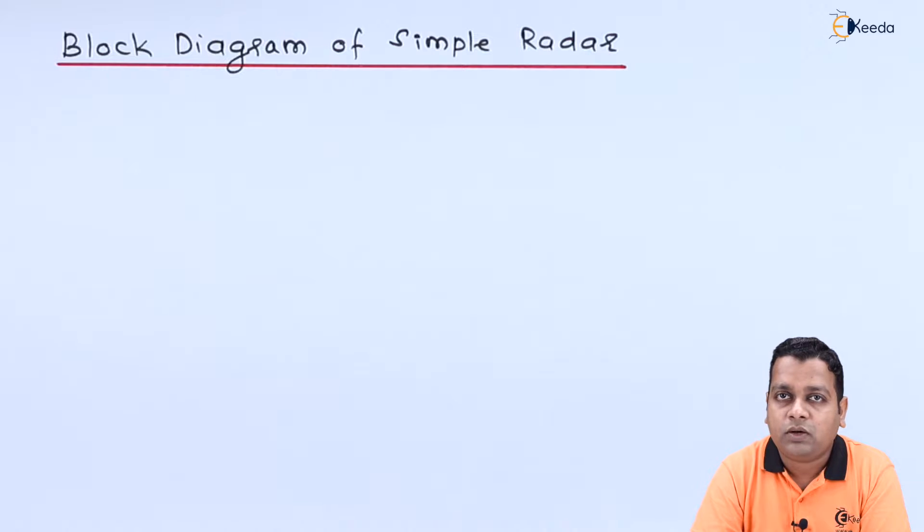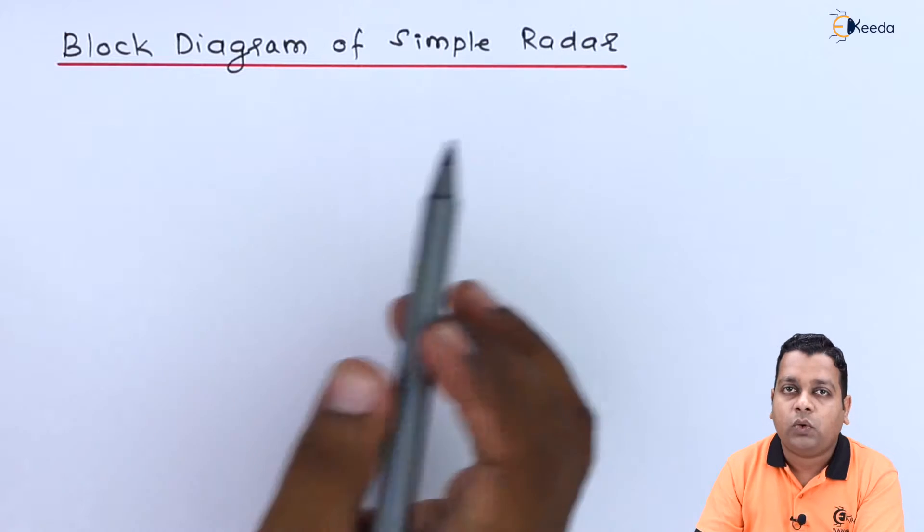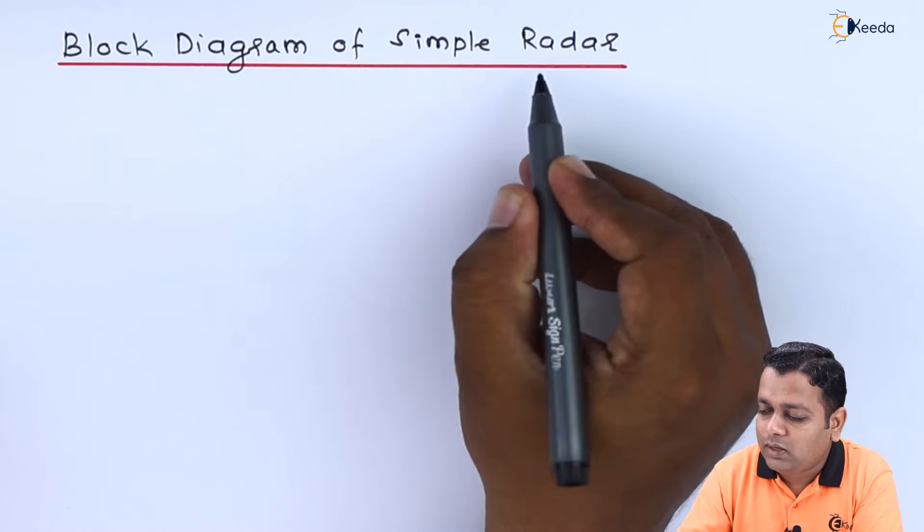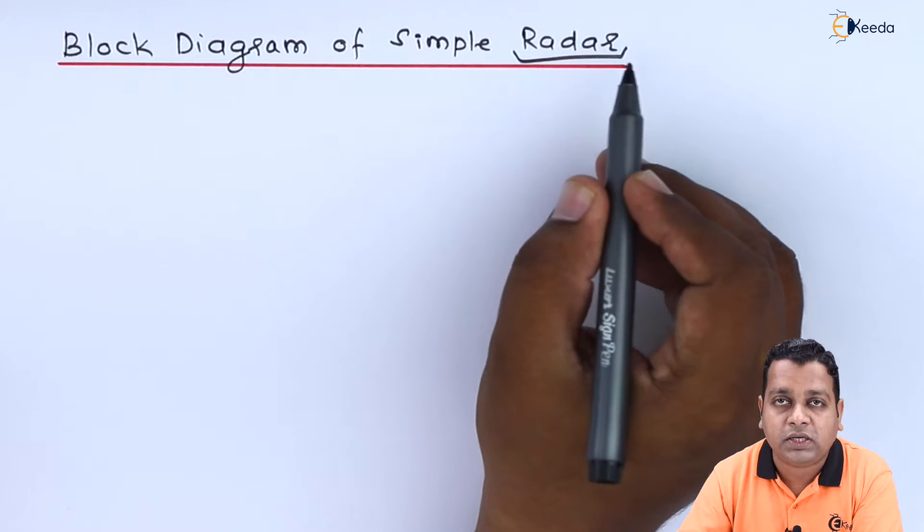So here we start with our topic, titled block diagram of simple radar. I hope from the previous video, the introduction to the radar, it is very clear that it is standing for radio detection and ranging.